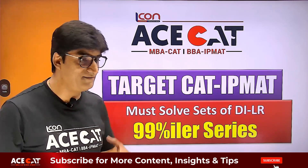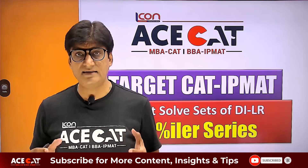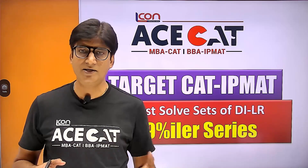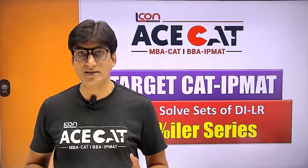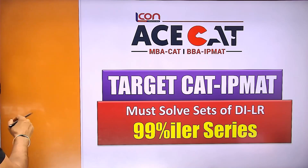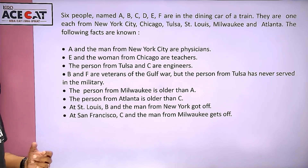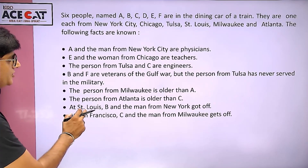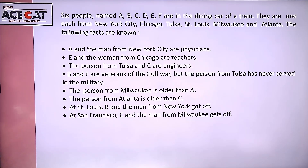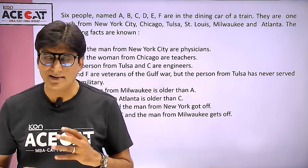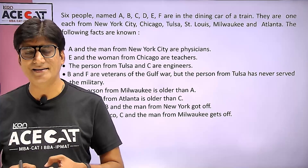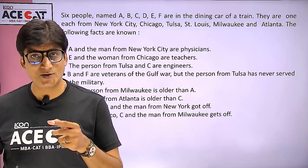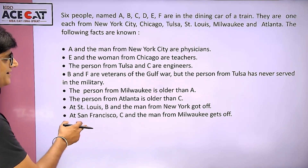This is not a set based on data interpretation. Today we are going to have a set on logical reasoning where some data and some conditions will be given to us, and keeping those conditions in mind we need to make an arrangement and answer five questions based on it. So students, here comes the question — this is the dataset. Read it carefully, arrange everything, and then answer the five questions. Try to solve it yourself first — take three, four, or five minutes — and most importantly, attempt to solve it on your own before watching the solution.